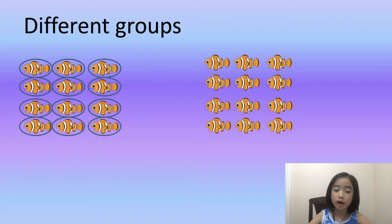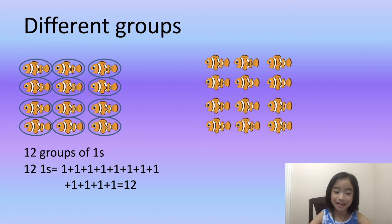I have twelve groups, each with one fish. I have twelve groups of one fish. I have one plus one, twelve ones added together equals twelve. Twelve times one equals twelve.